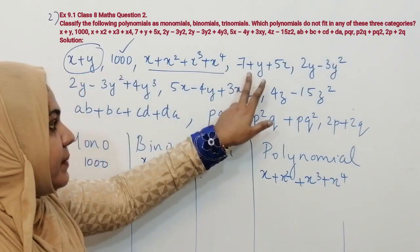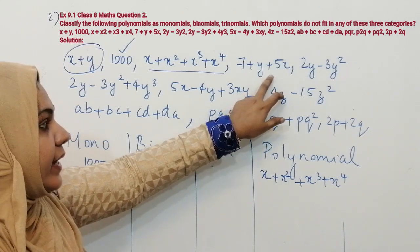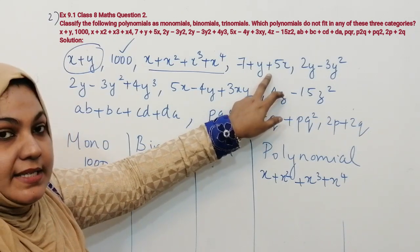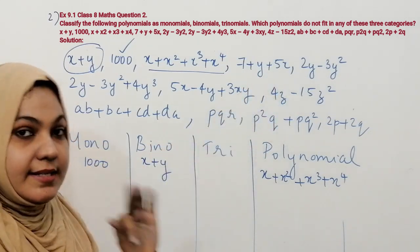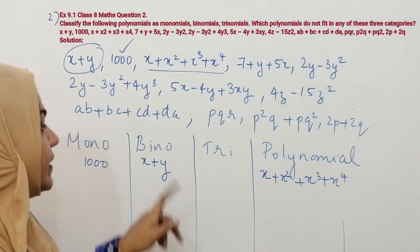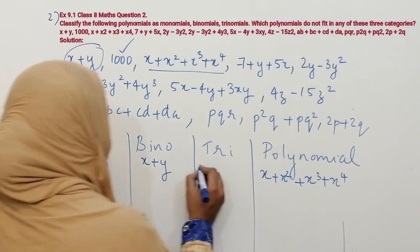The next one is 7 plus y plus 5x, which is an algebraic expression containing three terms. That means it is under trinomial.